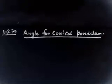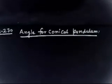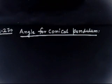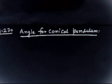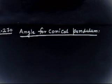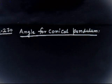Let us discuss problem 1.270. This is something related to finding an angle. Let me read the question. This is a conical pendulum. A thin uniform rod of length L and mass M rotates uniformly about a vertical axis with angular velocity omega.